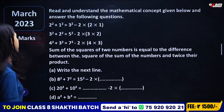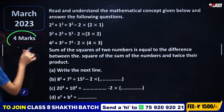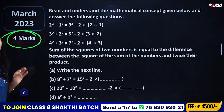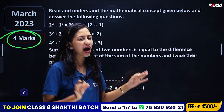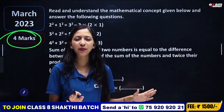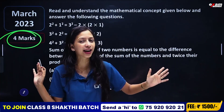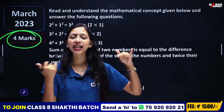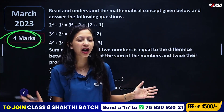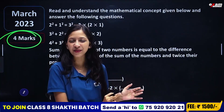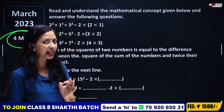First, in the first book, in March 2023, there is a question that comes for 4 marks. In this chapter, it is a very simple chapter. If we learn about identities, then it is not a direct application. So it is a very simple chapter.